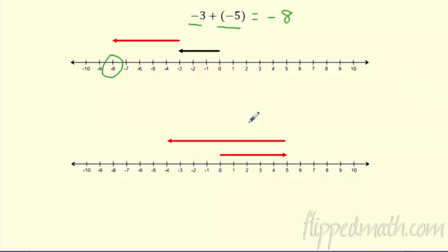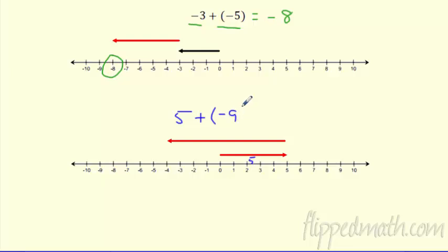What if I give you the picture and ask you to model it? Check out this one: I started at zero, I went to five — so I definitely started and went five in a positive direction. Then what did I add to it? I'm getting more negative, so I added — one, two, three, four, five, six, seven, eight, nine — I added nine in a negative direction. Where did I end up? I ended up at negative four. So you might look at these little models and write your own equation.